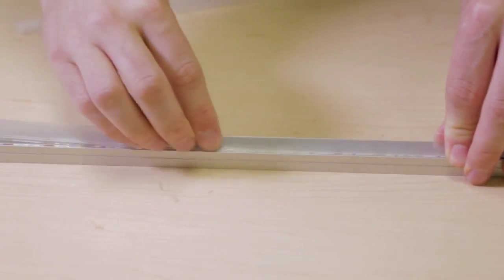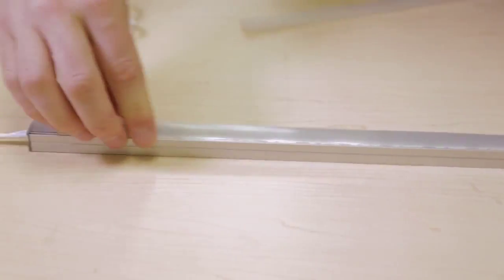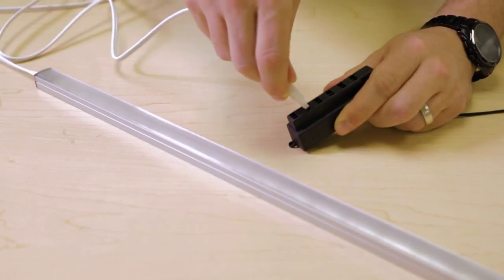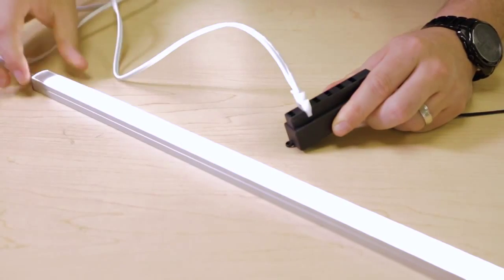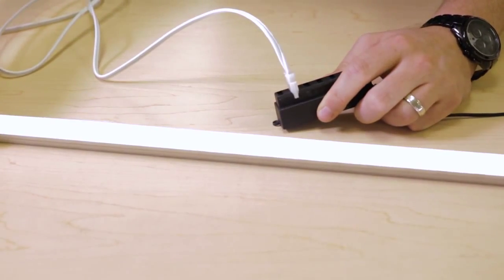Now gently snap the diffuser into the extrusion. Plug your new Infinex fixture into a Tresco 12 volt DC power supply to test the light.